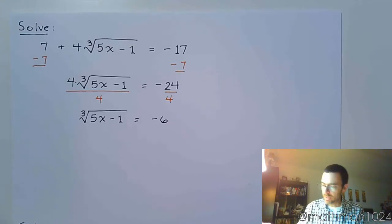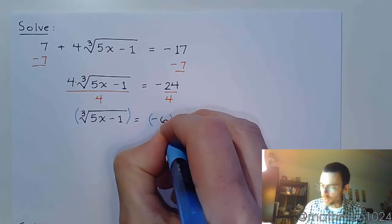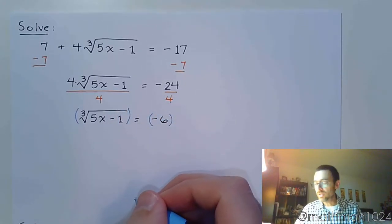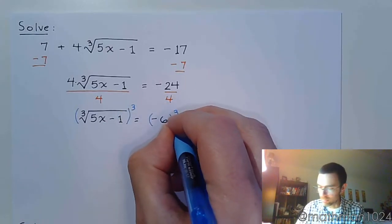And so now we have the cube root of 5x minus 1 is equal to negative 6. To undo the cube root, this is where we can finally apply that power property. Raise both sides of the equation to a power that matches the index. So I'm going to raise both sides to the third power. Just like that.